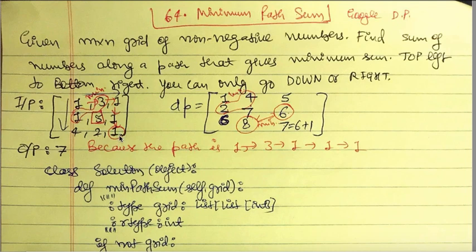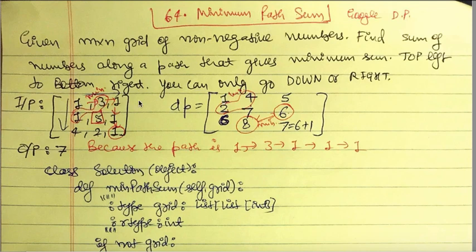A systematic way to do it is with the help of a DP array. DP is a temporary variable typically used for dynamic programming questions. We define a DP grid of the same size as the input, and initialize the first element to be the same as the first element in the input, which is 1. Next, we compute the first row and first column of the DP array.